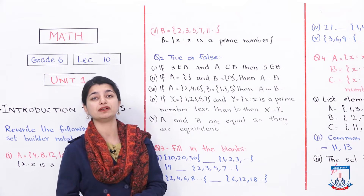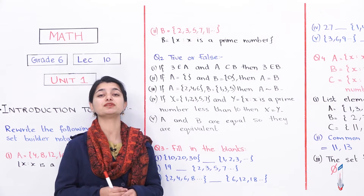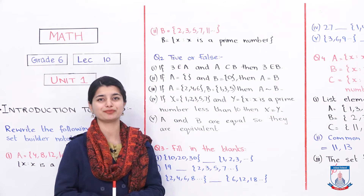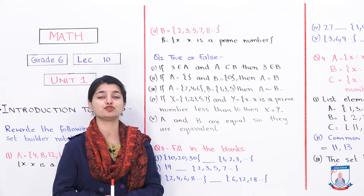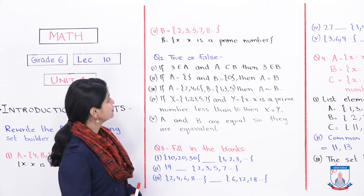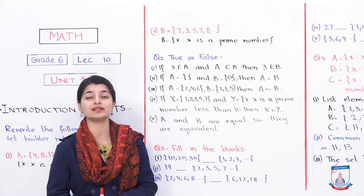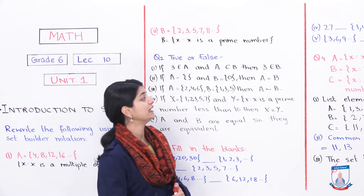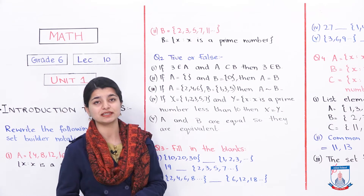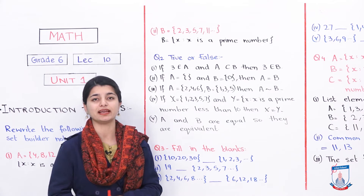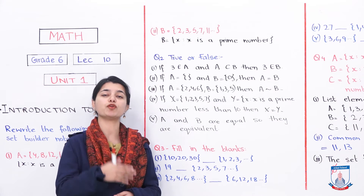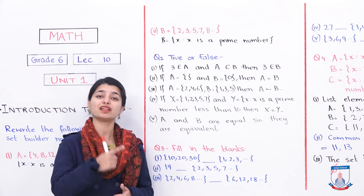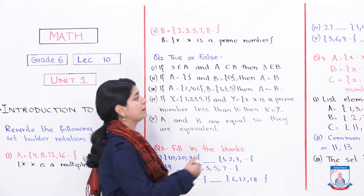I hope you are back after completing those two parts. Now let's look at question number 2, which is true and false. You have to tell which statement is true and which is false. The first statement says: 3 is an element of set A, and A is a subset of B, then 3 is an element of B. Since set A is a proper subset of set B, and 3 is in A, it follows that 3 is also in B. This statement is true.